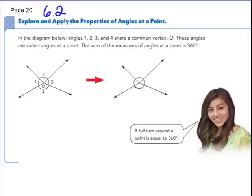Today's notes is in 6.2 in the textbook. You can look at page 20 and follow along. In the diagram below, angles 1, 2, 3, and 4 share a common vertex O. These angles are called angles at a point. The sum of the measures of angles at a point is 360 degrees, because if you think about connecting all of these arcs here, you're making a complete circle. A full turn around any point is 360 degrees. So it might be split up into three angles or four angles or five angles. The sum of them is 360.